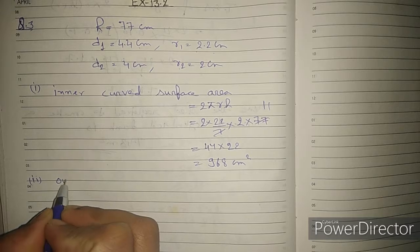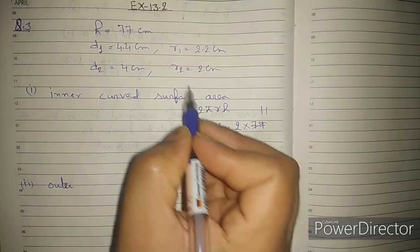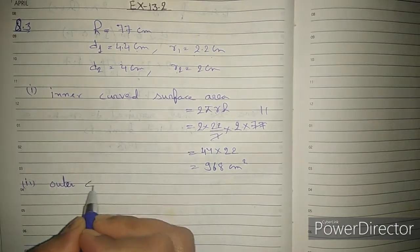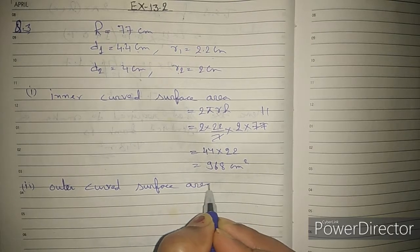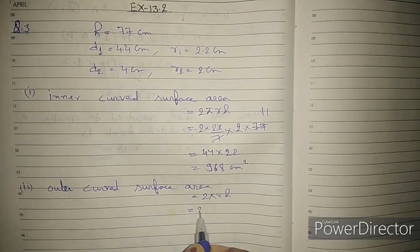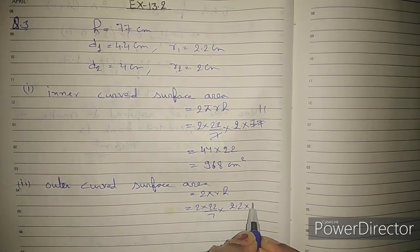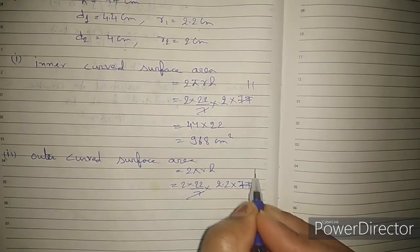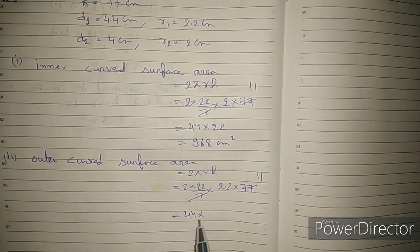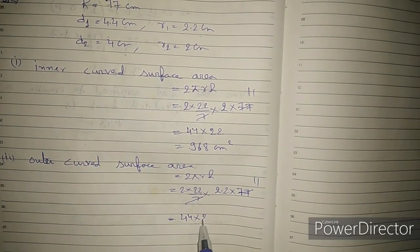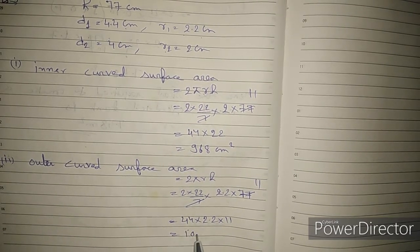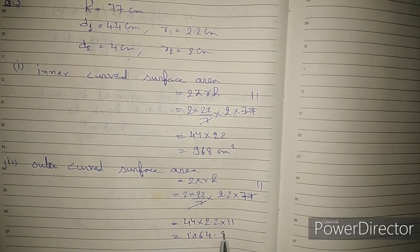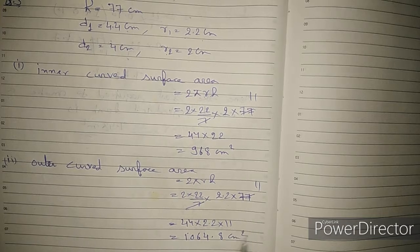Similarly, we can easily find the outer curved surface area. For the outer radius, R = 2.2 cm. The formula is the same: 2πRH. So we calculate: 2 × (22/7) × 2.2 × 77. Solving this: 44 × 2.2 × 11 = 1064.8 cm². This is our outer curved surface area.